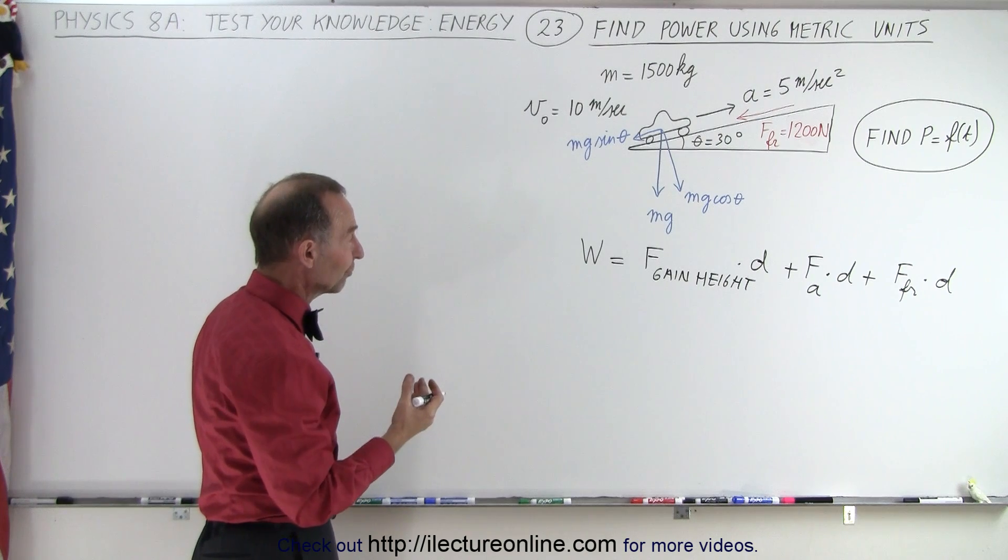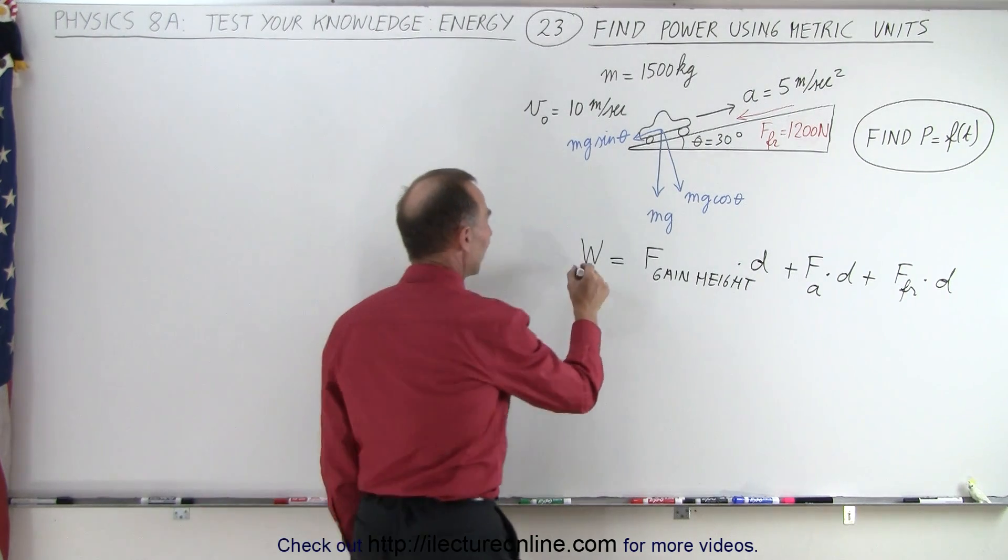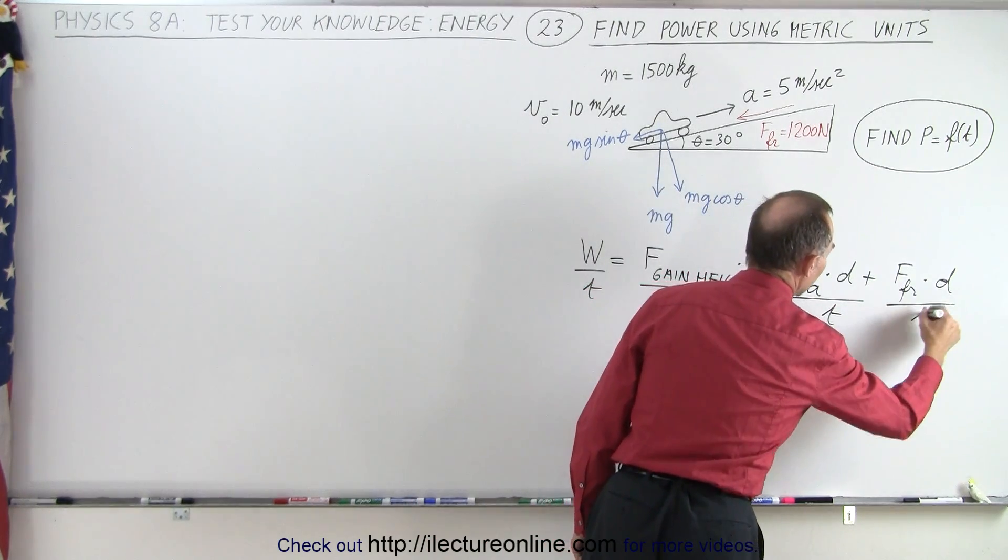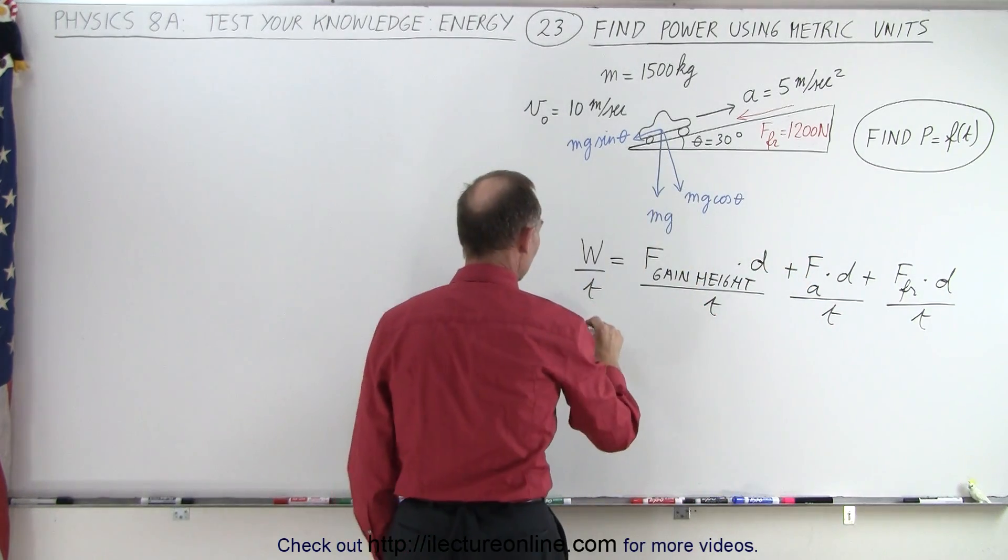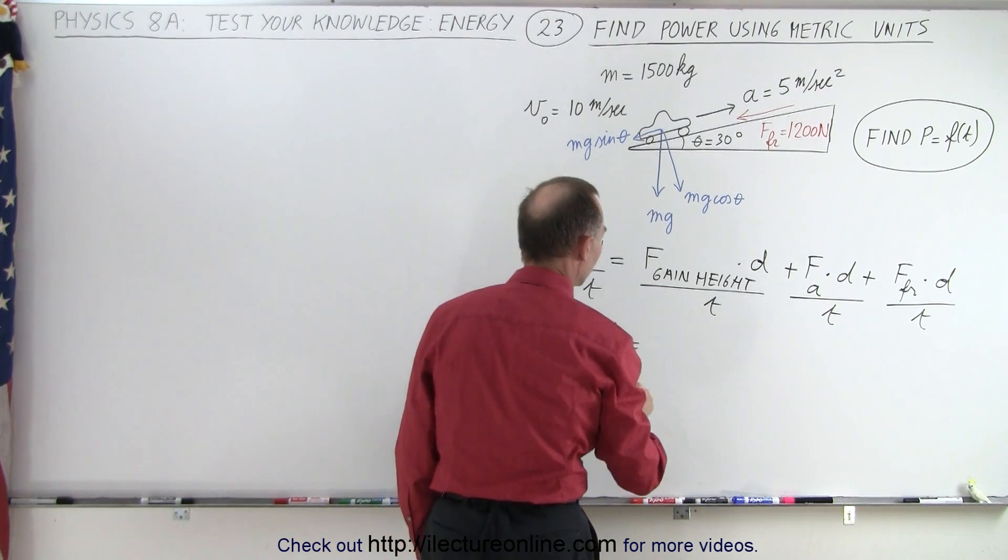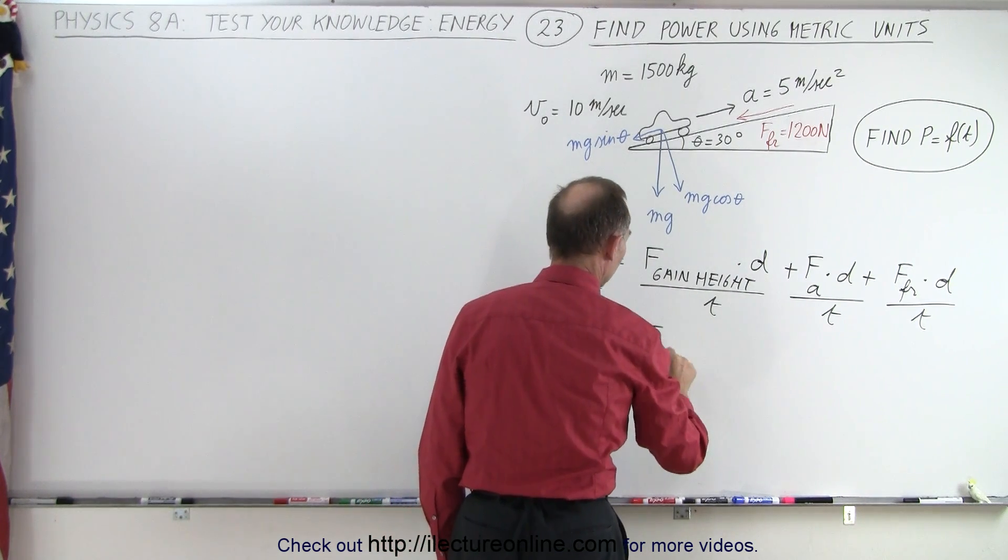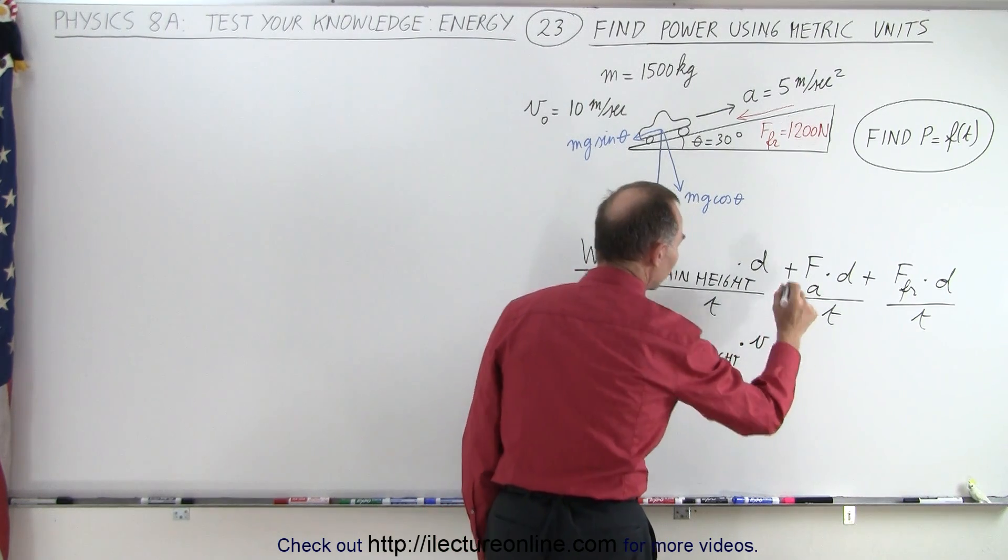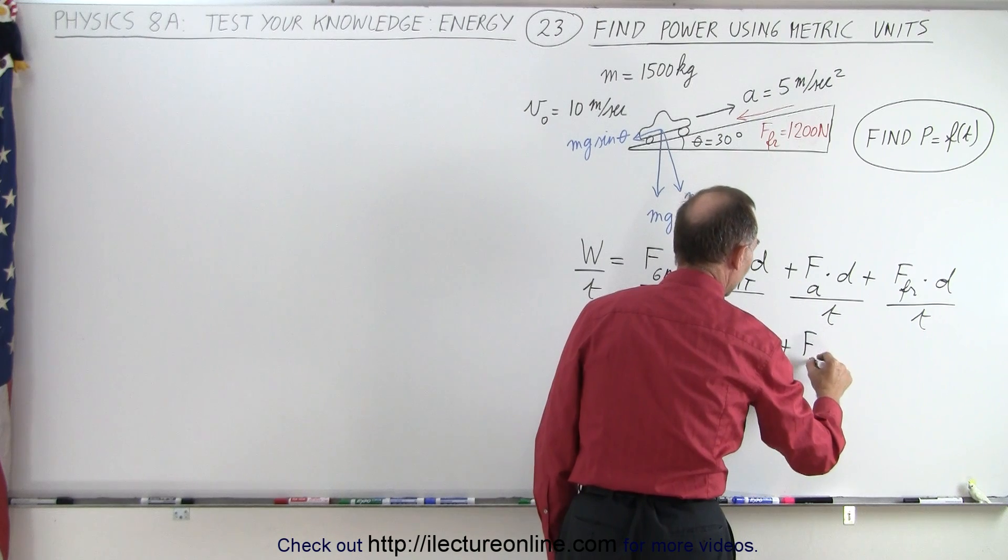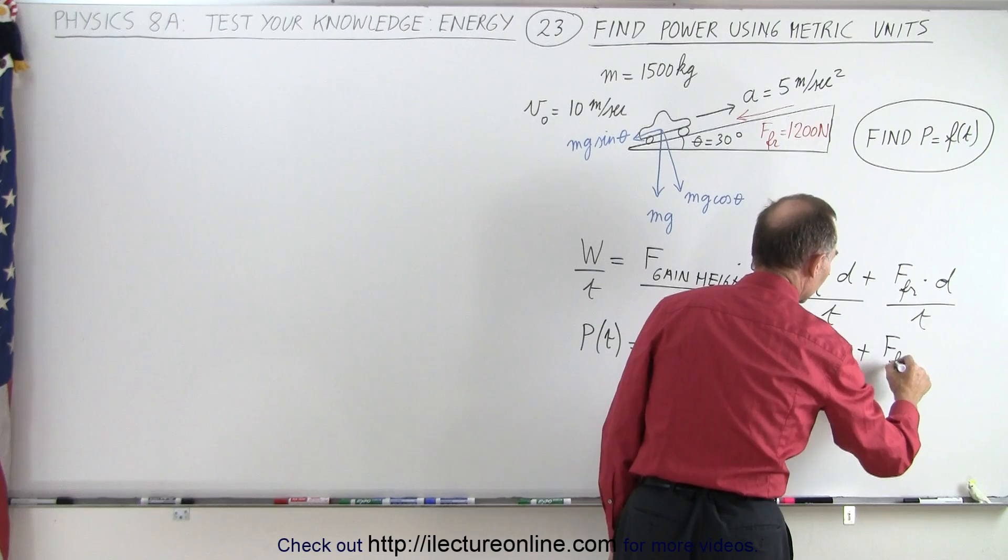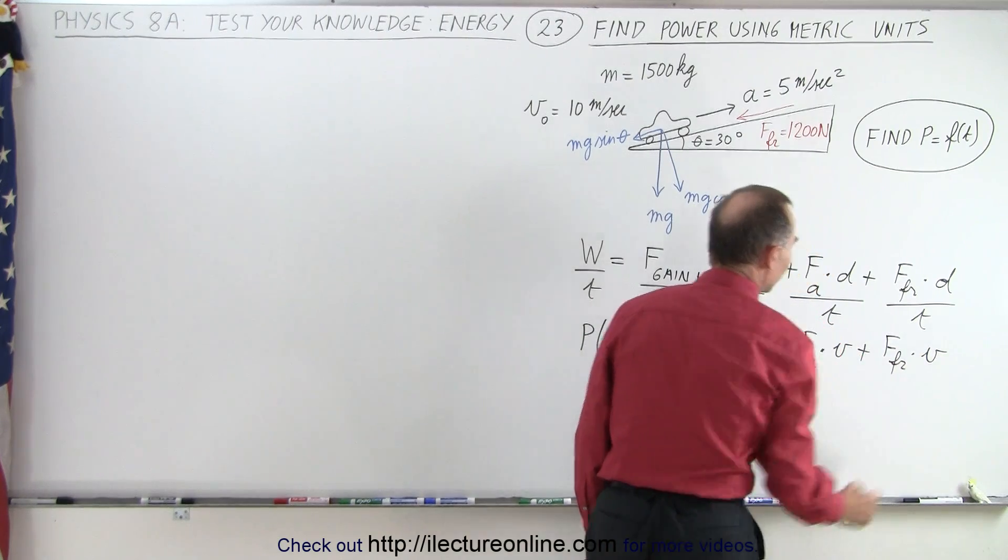But then in order to find the power, we divide everything by time. And that's when the distance divided by time becomes velocity, which means the power required as a function of time is equal to the force required to gain the height times velocity, plus the force required to accelerate times velocity, plus the force required to overcome friction times velocity.